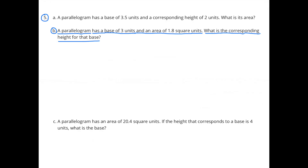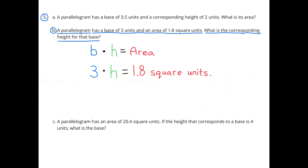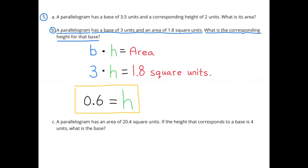Number 5B: A parallelogram has a base of 3 units and an area of 1.8 square units. What is the corresponding height for that base? Base times height equals area. The base is 3, the height is unknown, and the area is 1.8 square units. We need to find what number times 3 equals 1.8, which we can do by dividing. 1.8 divided by 3 is 0.6. So the height is 0.6 units.